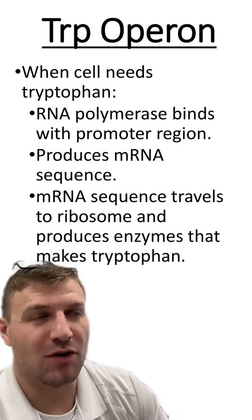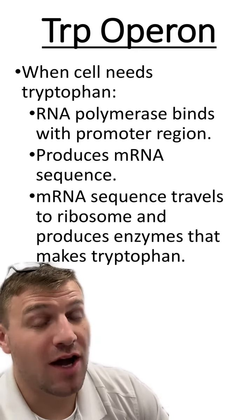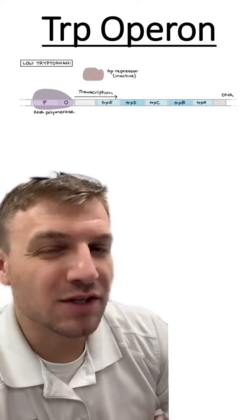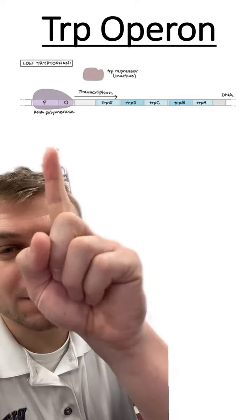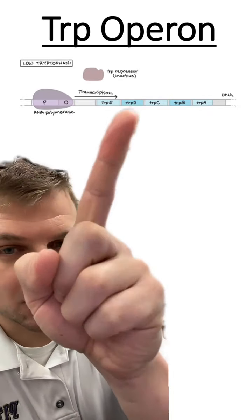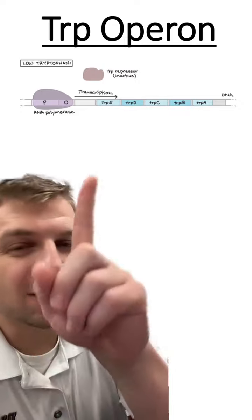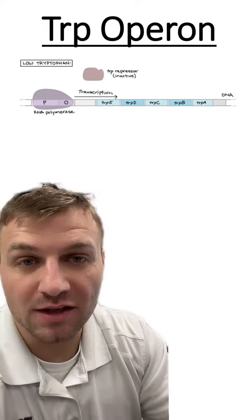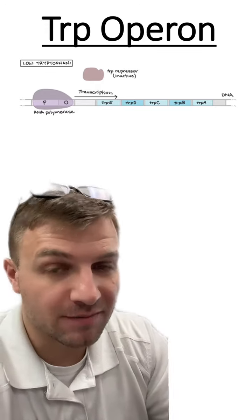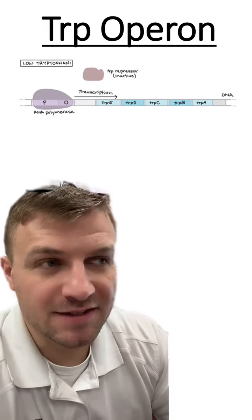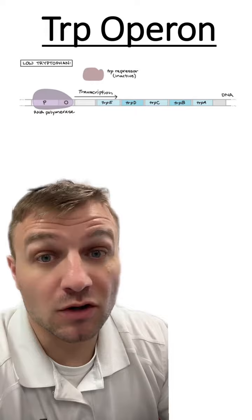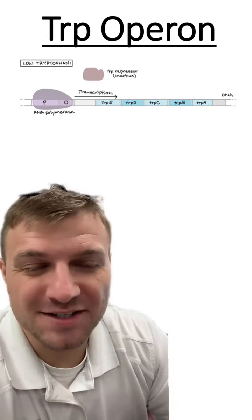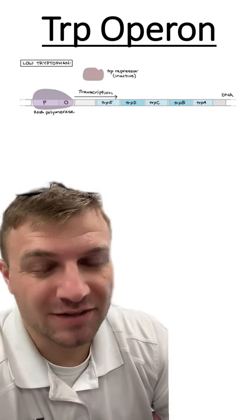It's important to note that the repressor is not bound to the operator during this time. You can see in our illustration RNA polymerase binding to the promoter and going through transcription. These genes make the mRNA and eventually the proteins that produce tryptophan, because there are low levels of tryptophan and the repressor is inactive and not bound to the operator.